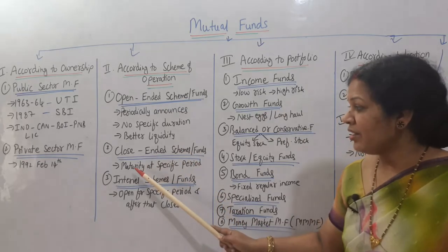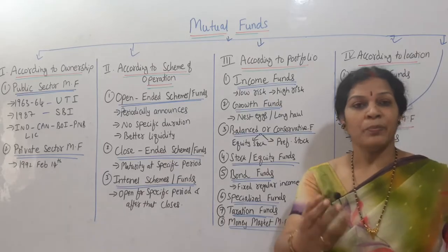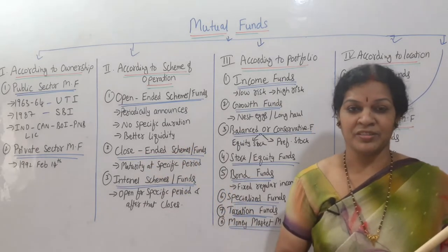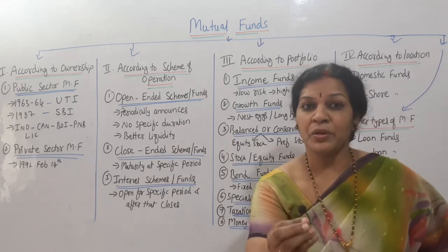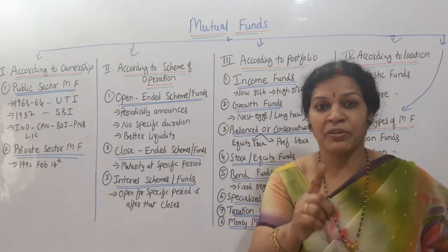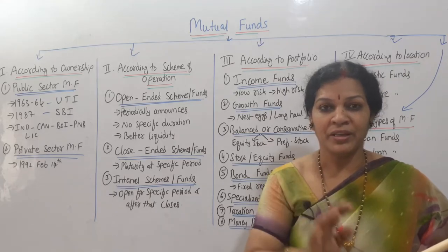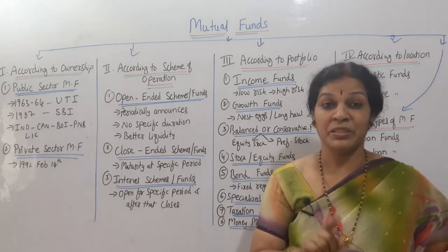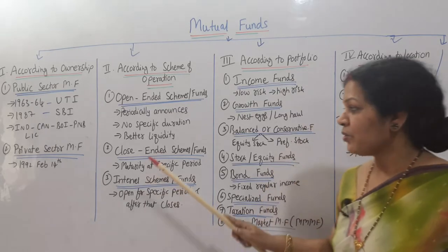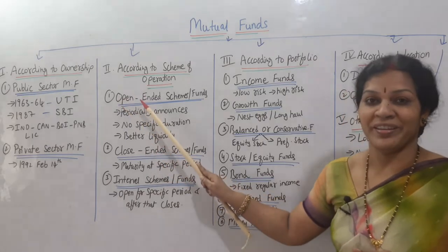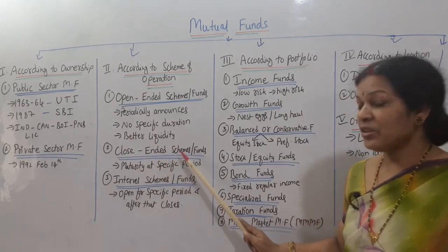If you understand open-ended schemes, then close-ended schemes are easy to understand. In close-ended schemes, maturity is for a specific period only. Suppose I purchase close-ended funds for one year — I am bound for that one year. Only after that period can I withdraw the amount. So close-ended means the ending or closing point is fixed.